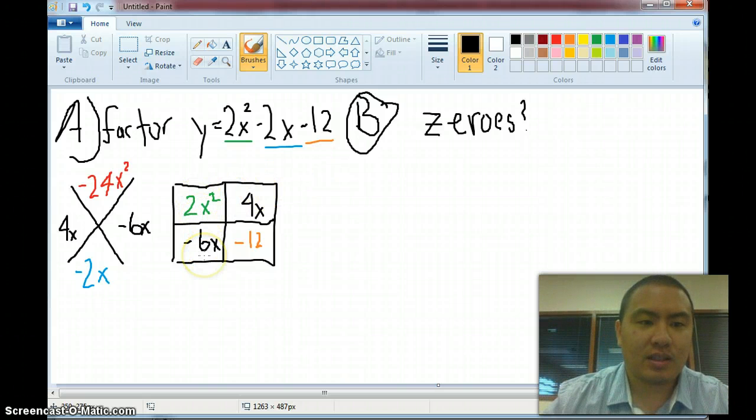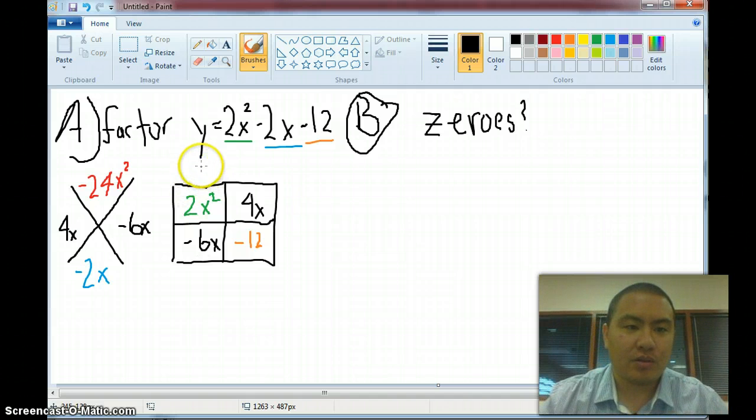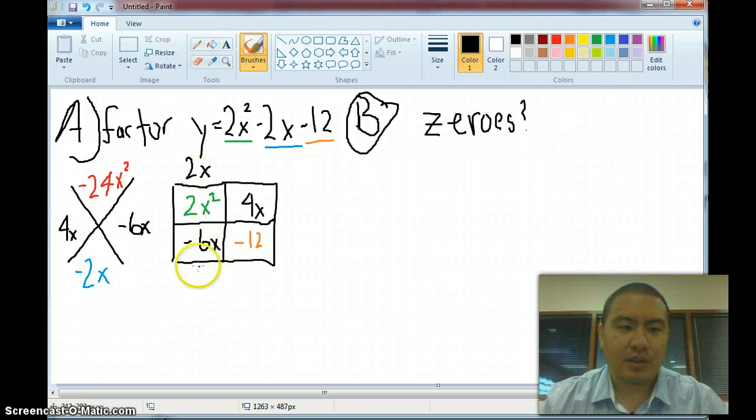So the next thing you have to do is you need to think about the greatest common factor between 2x squared and negative 6x. What do those two share in common? Well, they share an x. And then the other thing they share in common is a positive 2, right. Because I look at this one, yeah, it has a 2. This one also has a 2, a 2 times negative 3.